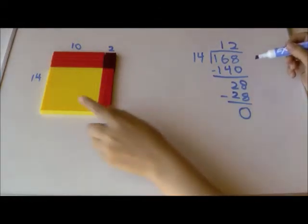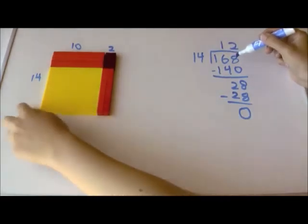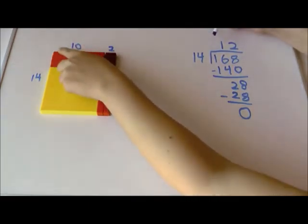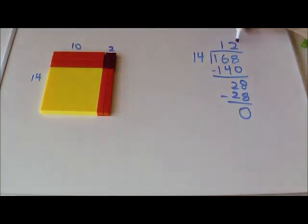So I've made a rectangle with 168 with 14 on one side and I've solved the problem by saying that the other side is 12, 10 and two.